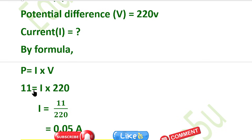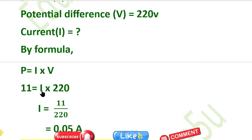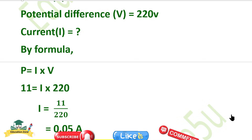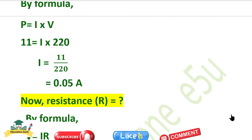For a lamp: P = 11 watt, V = 225 volt. Current I = 11 / 220 = 0.05 ampere. Now calculate the resistance using V = IR.